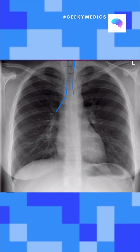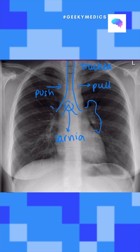A is for airway. Look at the trachea and see if it's being pushed or pulled in any direction. Then look at the carina, make sure it's visible, and look at the hila.